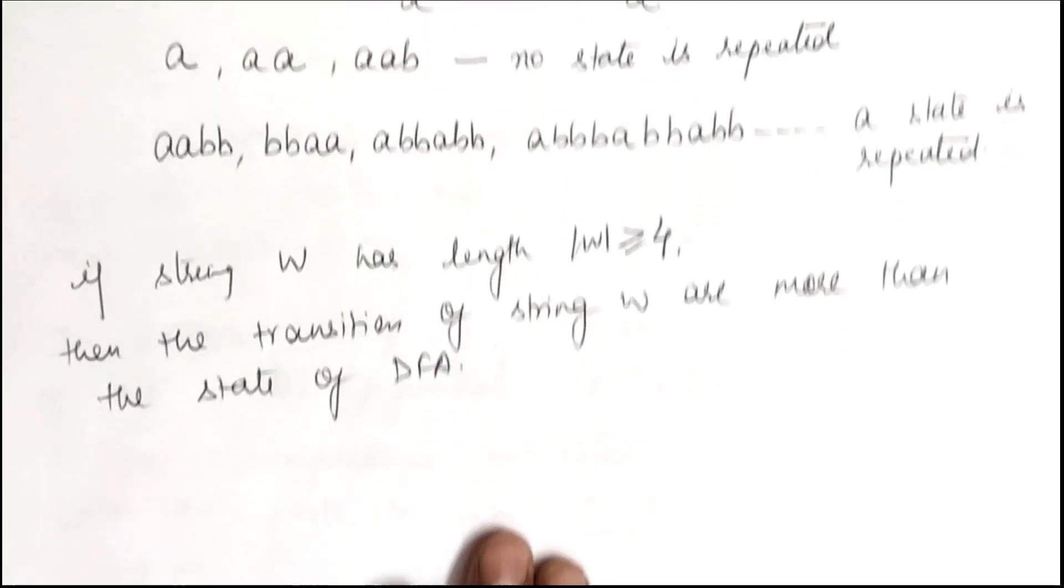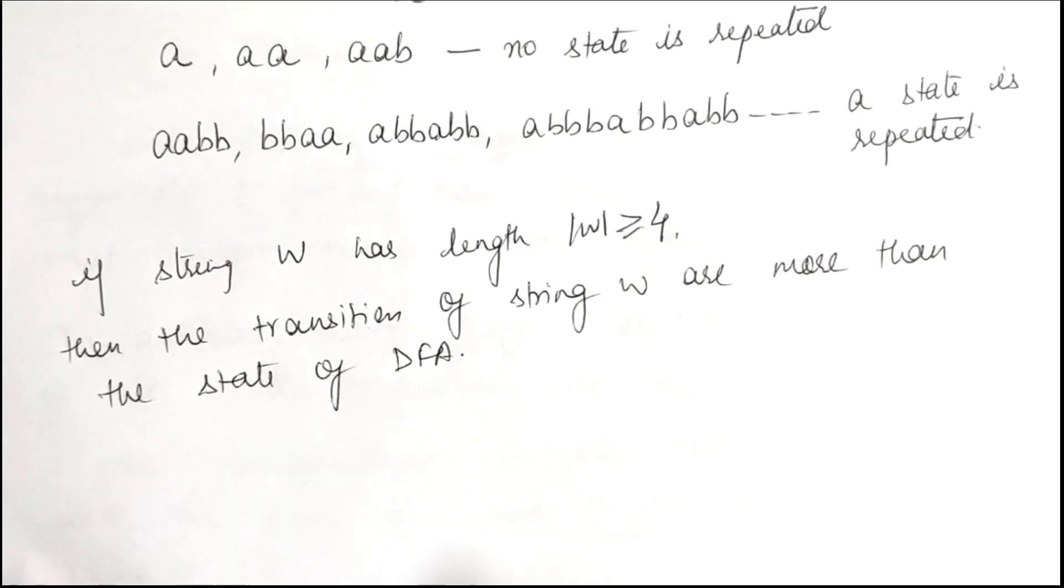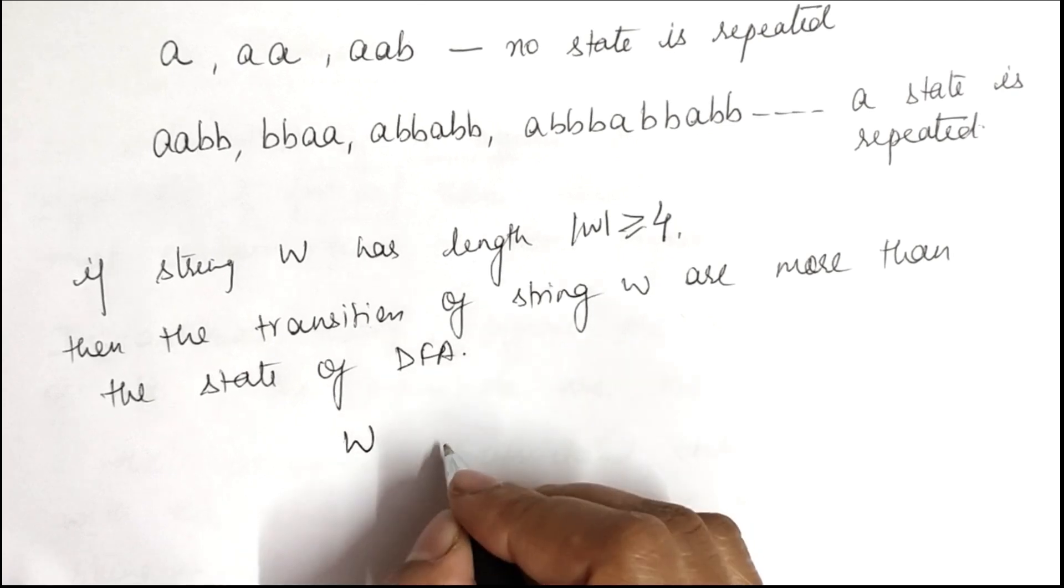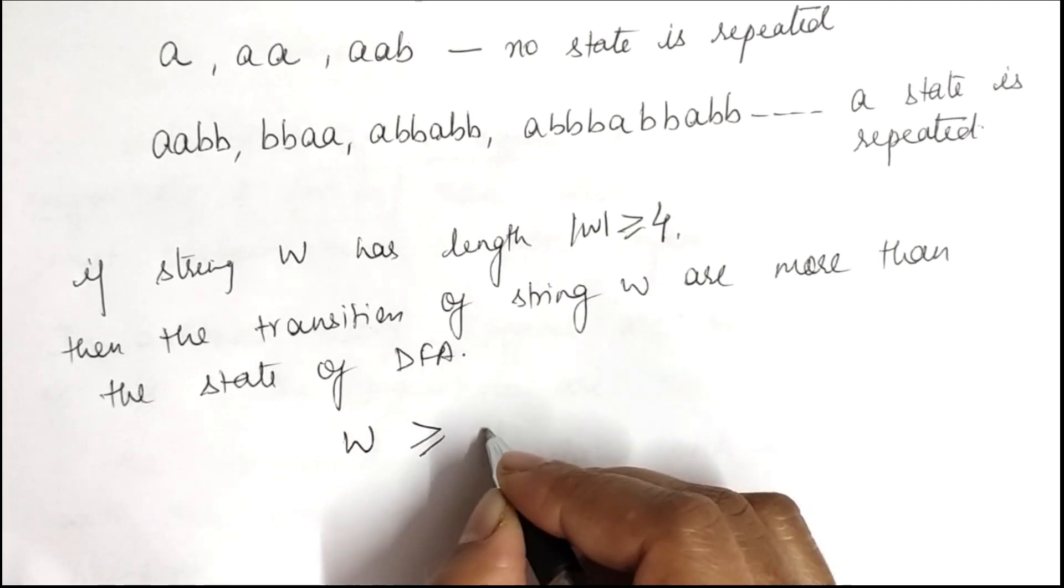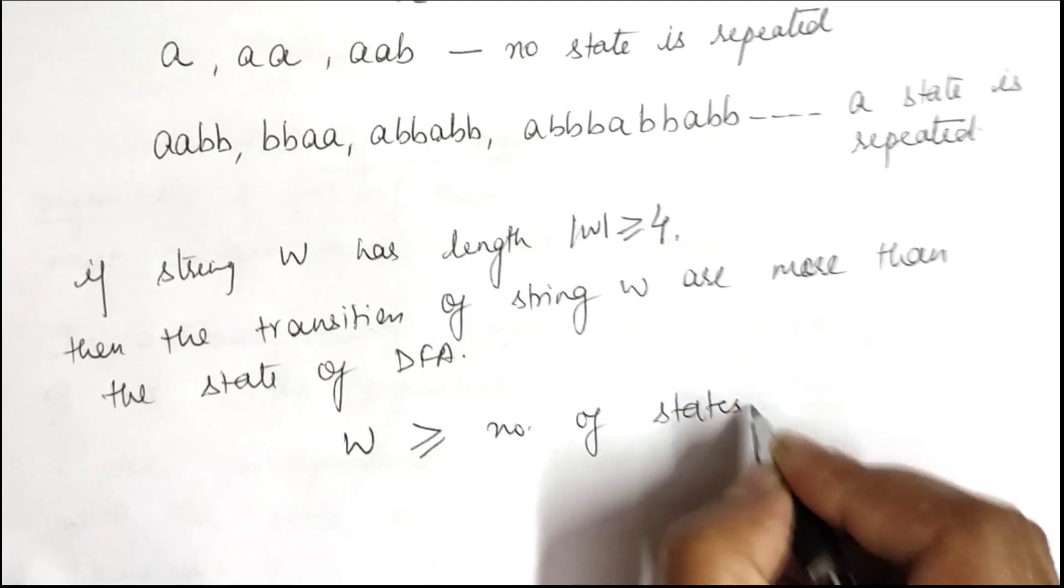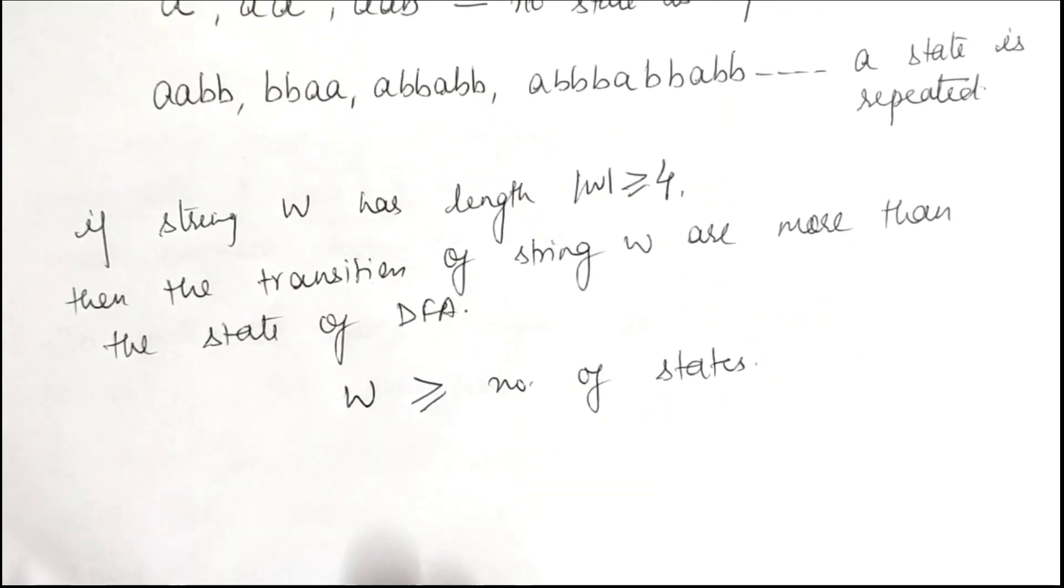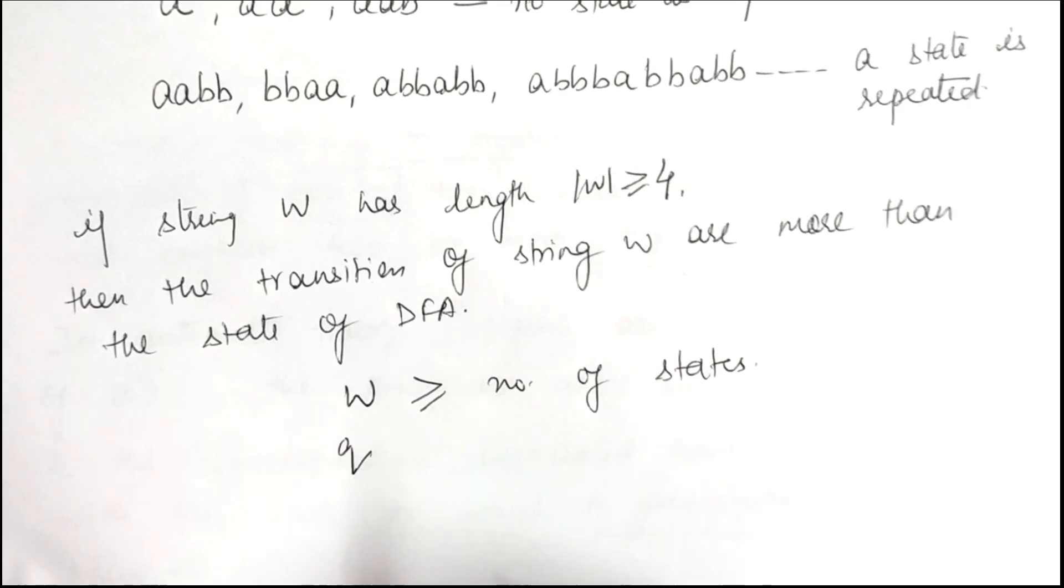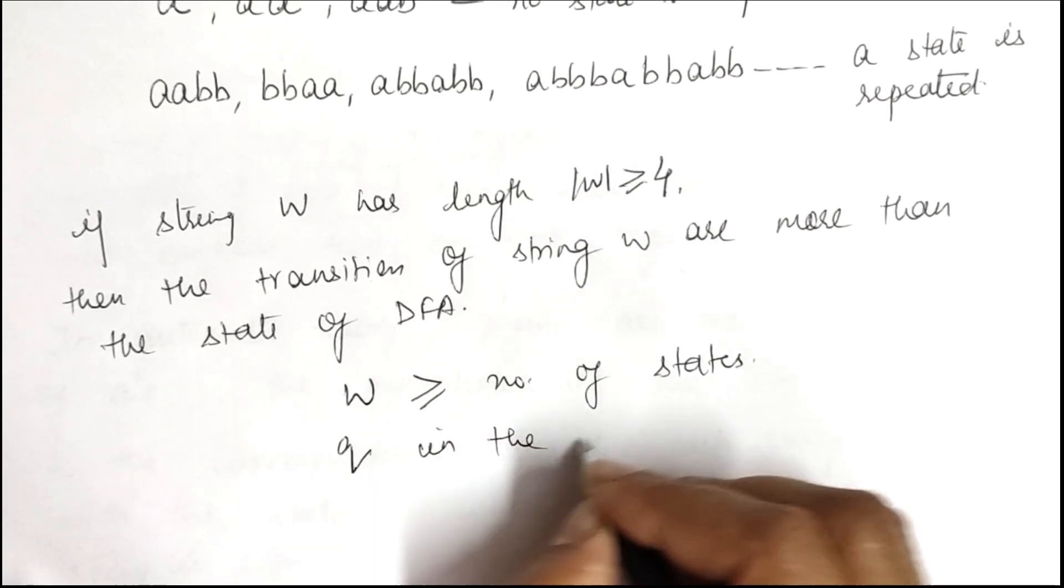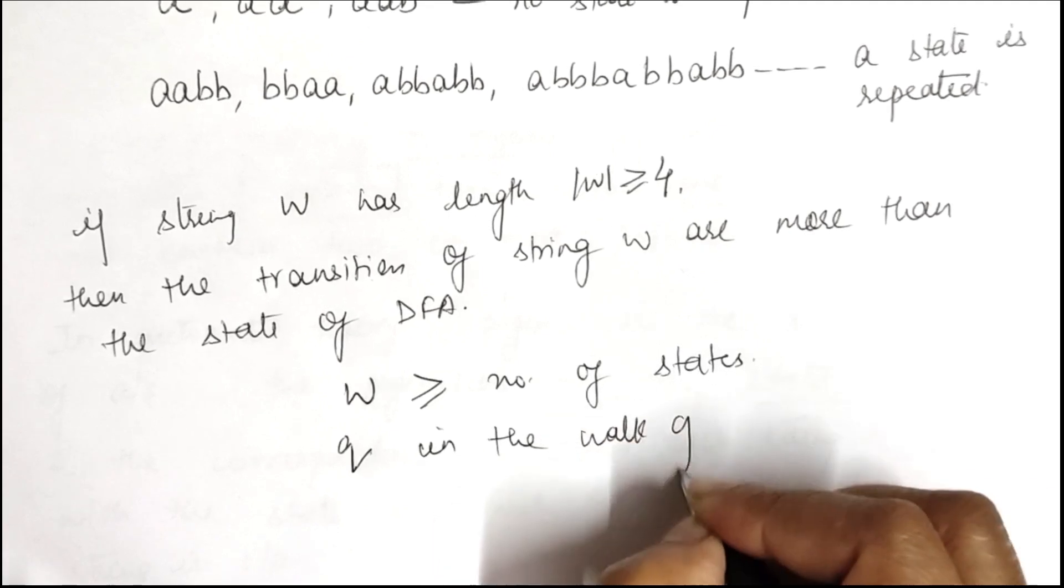Thus a state must be repeated. In general, for any DFA which has a string w with length greater than or equal to the number of states, a state q must be repeated in the walk of w.